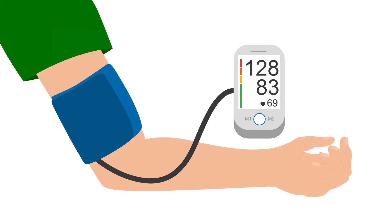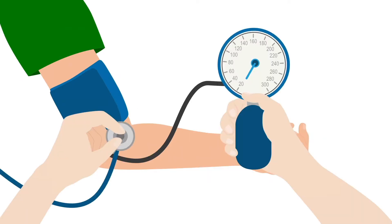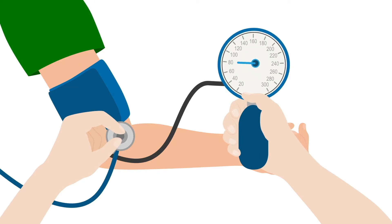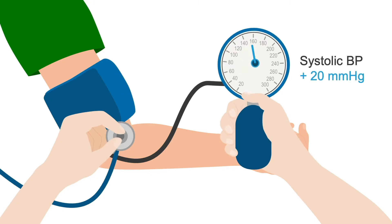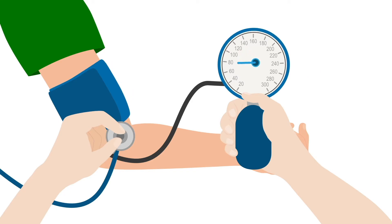I start with getting an idea of the patient's average systolic blood pressure, usually from an automated measurement. Then I get out the manual sphygmomanometer — I'll just call it a BP cuff — and prepare to take the blood pressure myself. I don't ask the patient to alter their breathing pattern in most cases. I inflate the cuff approximately 20 mmHg higher than the automated systolic measurement, and then very slowly release the pressure while watching the needle and listening.